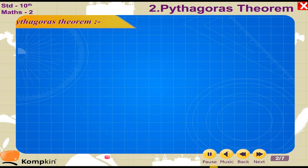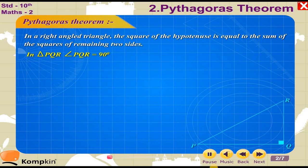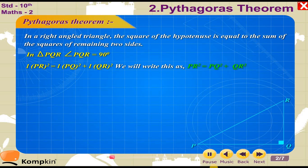Explanation of Pythagoras Theorem: In a right-angled triangle, the square of the hypotenuse is equal to the sum of the squares of the remaining two sides. In triangle PQR, angle PQR is equal to 90 degrees. Therefore, PR square is equal to PQ square plus QR square.